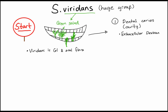When someone has a cavity and undergoes a dental procedure, there's injury in the mouth and Strep viridans can travel through the blood — and where does it go? It goes to the heart.